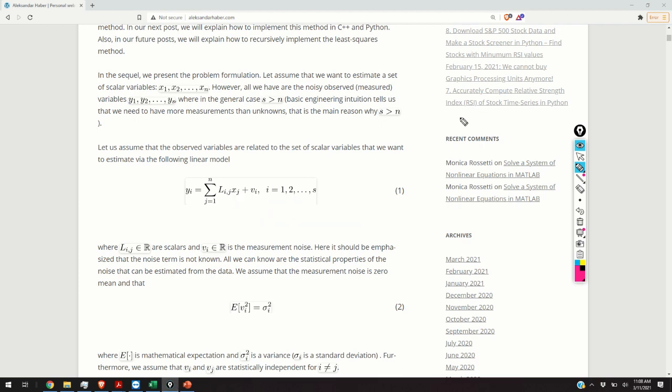In practice the observed variables yi are always corrupted by the measurement noise, and the measurement noise is represented in this equation by yi. Here it should be emphasized that the noise term is not known a priori. All we can know are the statistical properties of the noise that can be estimated from the data. So consequently we assume that the measurement noise is 0 mean, and that its variance is equal to sigma i squared. That is the variance is known. Consequently we are assuming that the noise is 0 mean and that its variance is known.